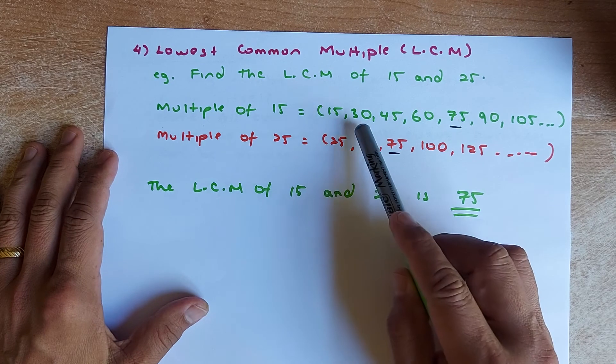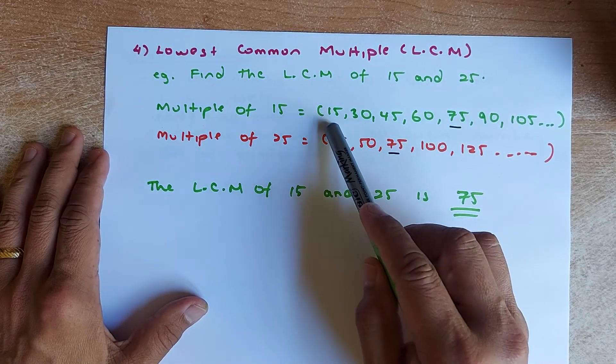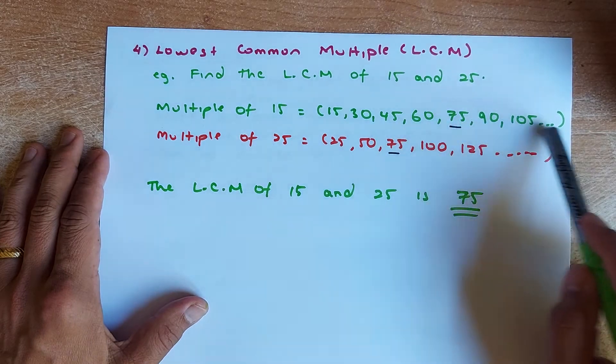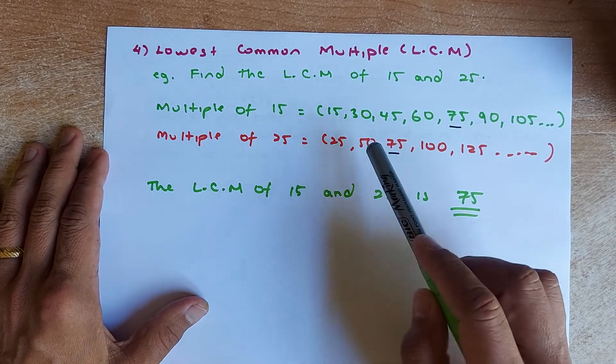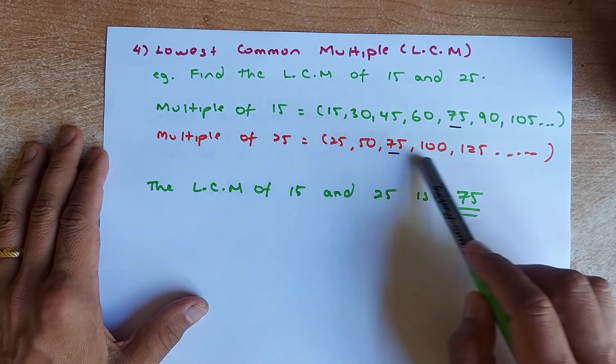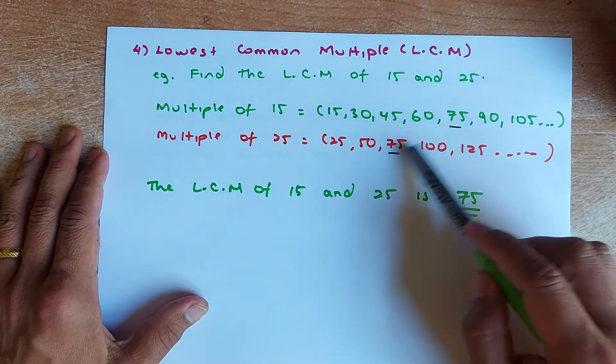I've done it. So 15 times 1 is 15, 15 times 2 is 30, and so forth. So the multiple of 15 is 15, 30, 45, 60, and so forth. Multiple of 25: 25 times 1 is 25, 25 times 2 is 50, and so forth. So you look for common multiples. The first common multiple is 75.